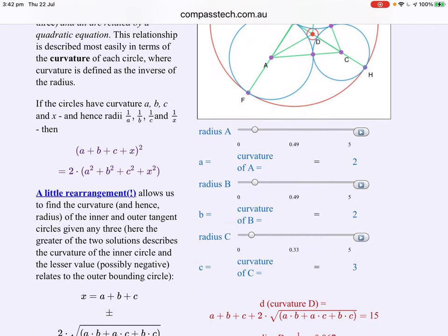So in other words, if the circles have curvature a, b, c and x, and hence radius one over a, one over b, one over c and one over x, then Descartes found that this can be expressed as a quadratic equation. A plus b plus c plus x all squared is equal to twice the square of the sum of each of them.